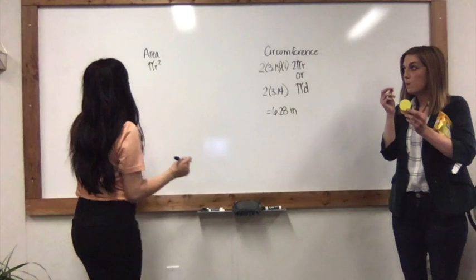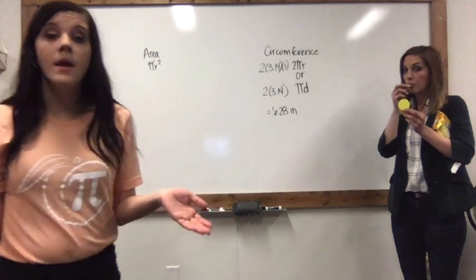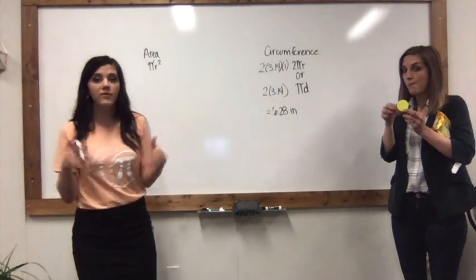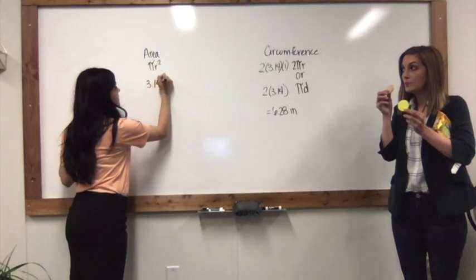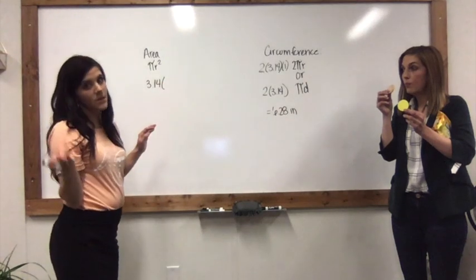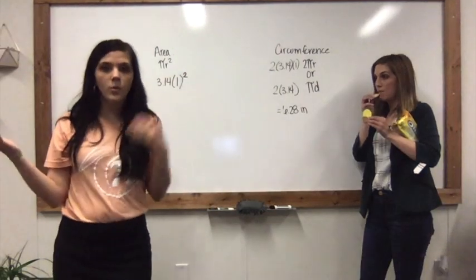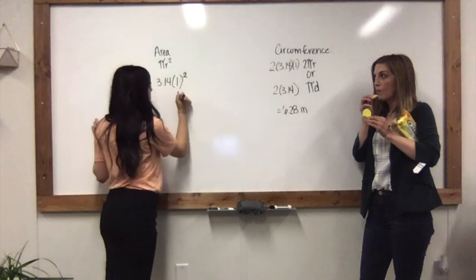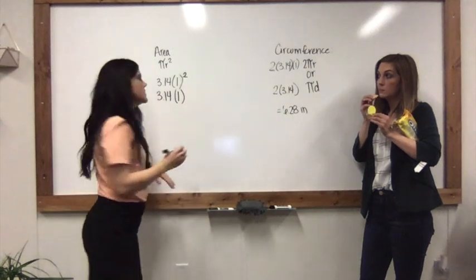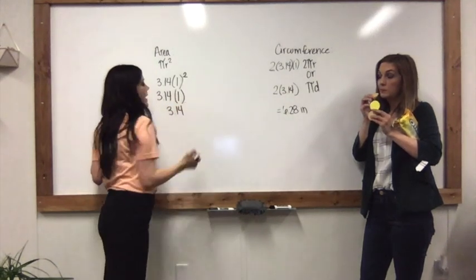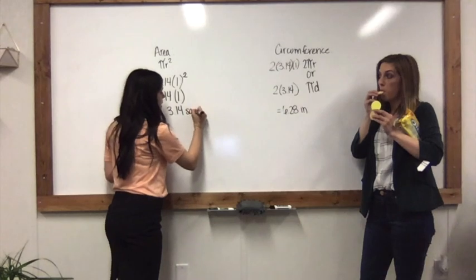Now let's look at area. For area, we have to use the radius — we cannot use the diameter. If you have the diameter, divide it by two to find the radius. The formula is 3.14 times the radius squared. We know the radius was one, and one squared is one times one, which still gives you one. So 3.14 times one is still 3.14. When we have area, we square our units — so our answer is in square inches.